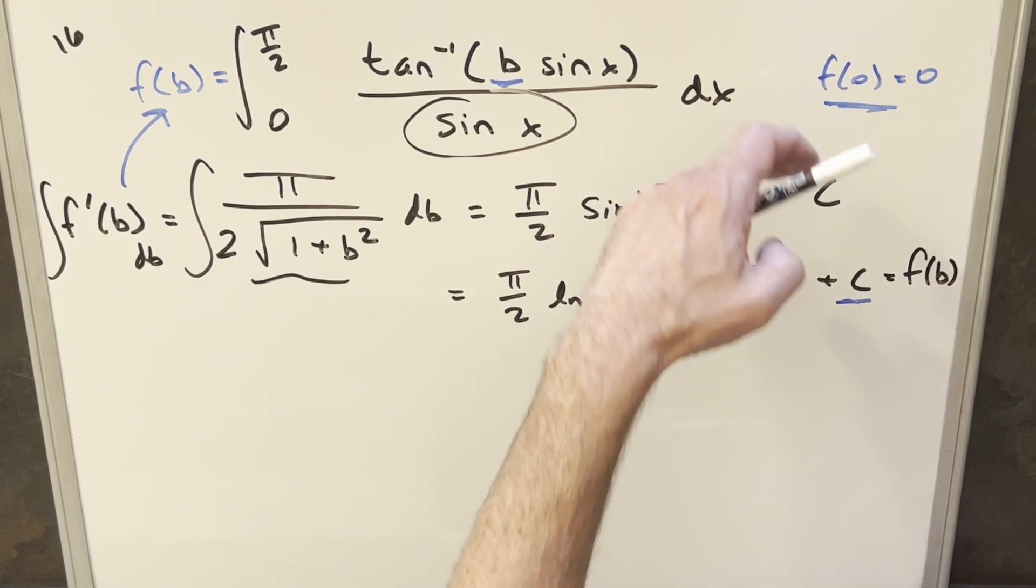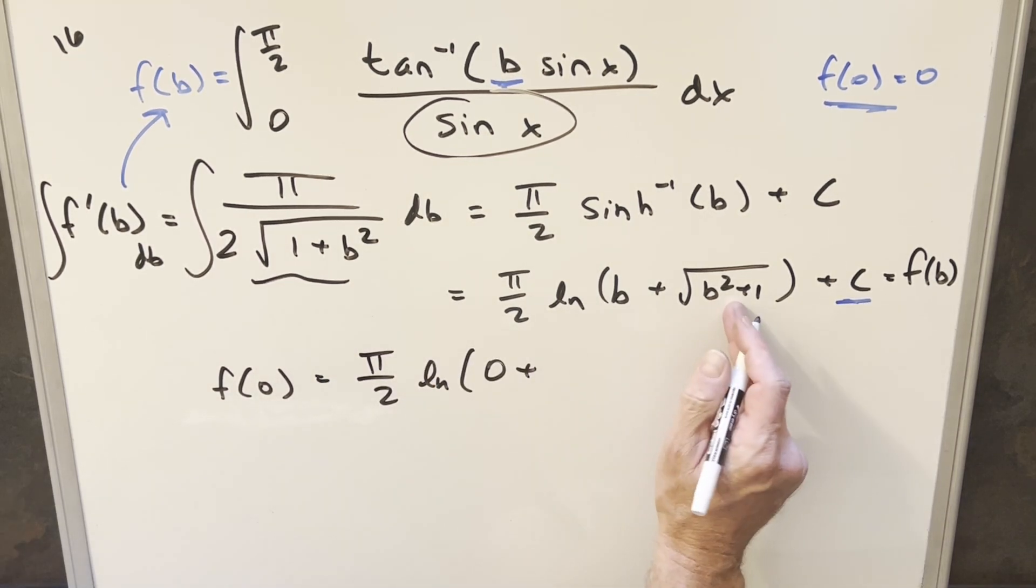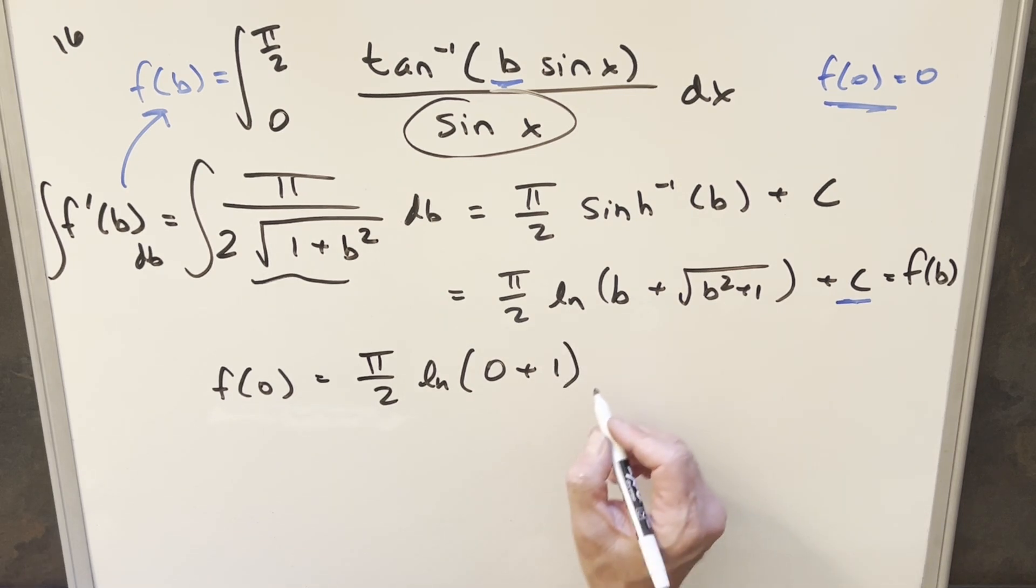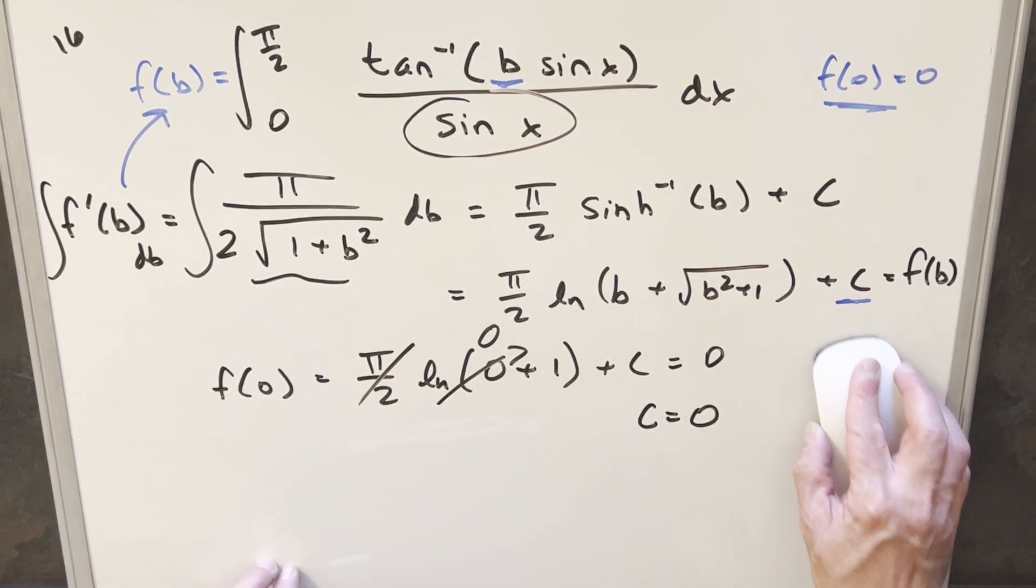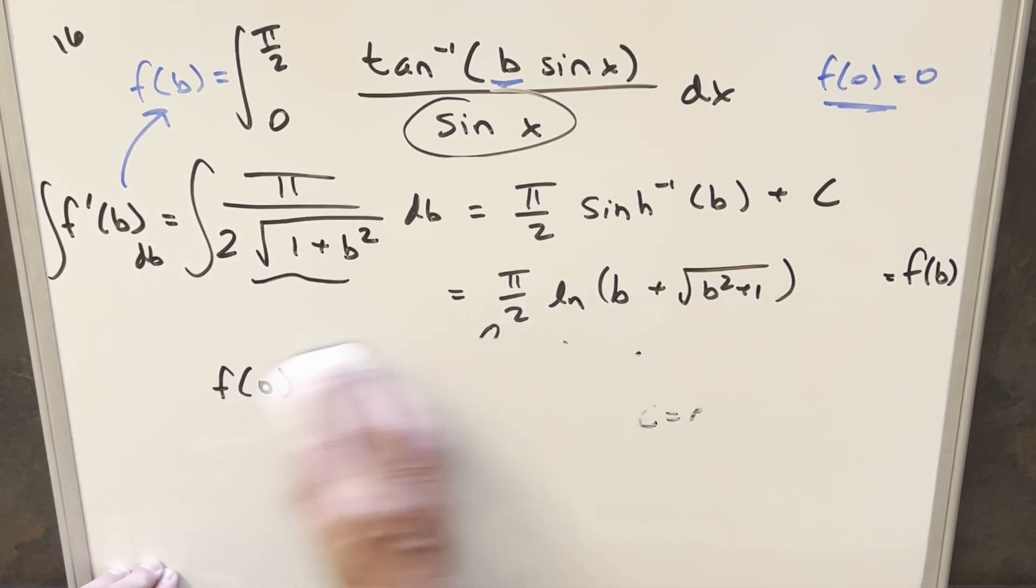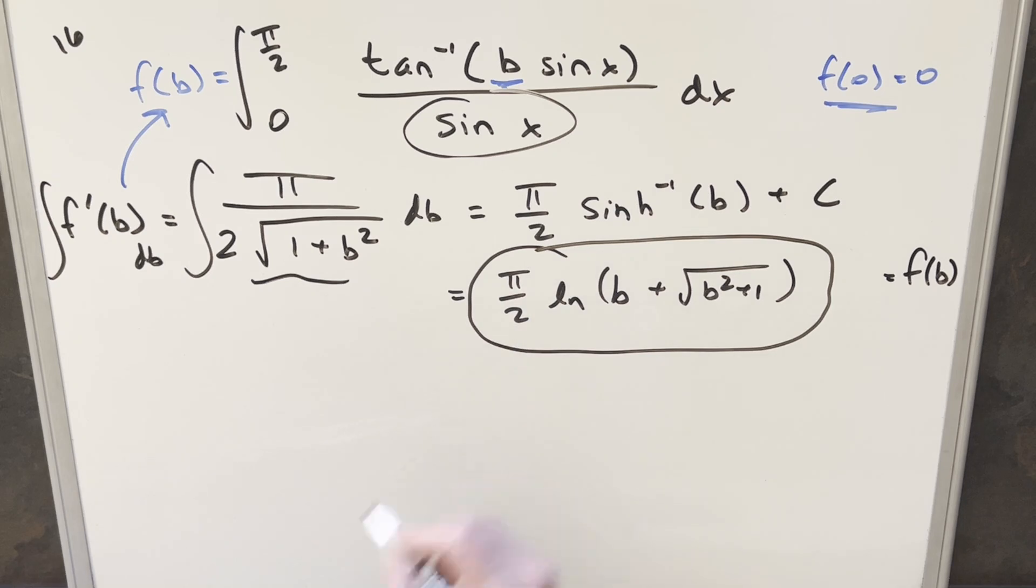And so what I want to do is get a value for this constant using the value we found before, just so we can get this just in terms of b. So using this, we just want to get our f of 0 values. We want to evaluate when b is 0. We're going to have pi over 2 natural log 0 plus 0 squared plus 1. That's just going to be a 1. But natural log of 1 here, that's just 0. So this whole part goes away. This whole thing is equal to 0. So what we can say from this, our c value is just 0. And so what we can do is just get rid of this c value here, because it's 0. Get rid of all this. And so for my final solution to this, we just have pi over 2 natural log b plus square root b squared plus 1.